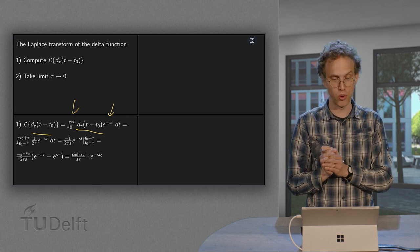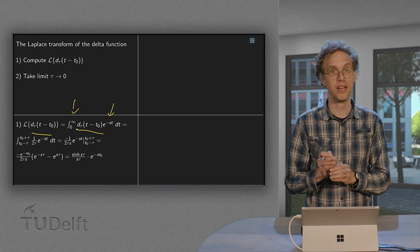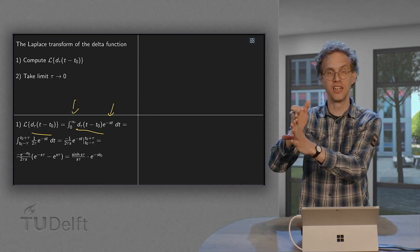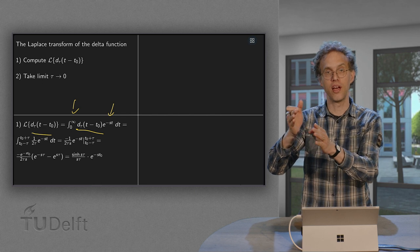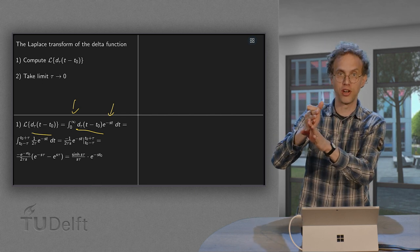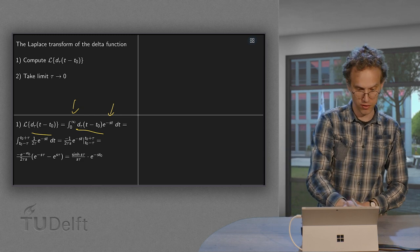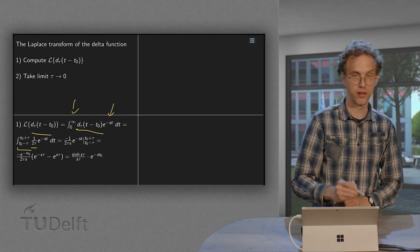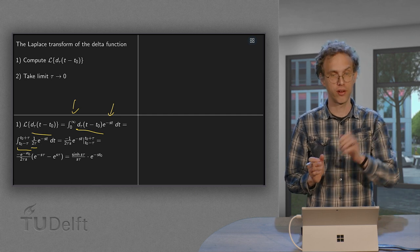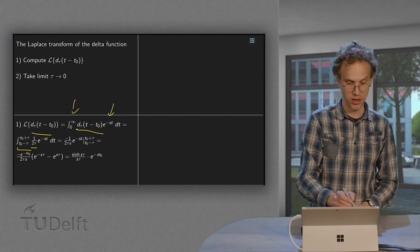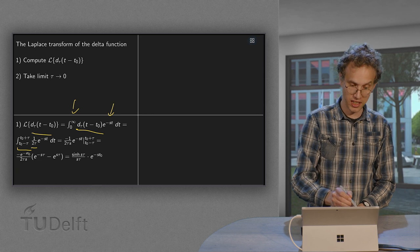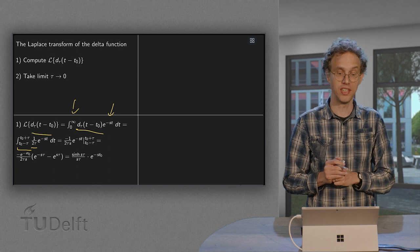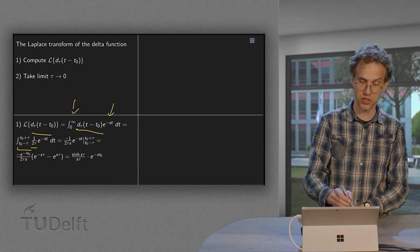This d_τ(t - t₀) is zero except in the interval centered around t₀, with t₀ minus τ and t₀ plus τ. That's what we do over here. And there, the function equals one over 2τ and everywhere else it is zero. So our integral becomes easy in that sense because we only have an e to the power minus st, which we need to integrate with respect to t.